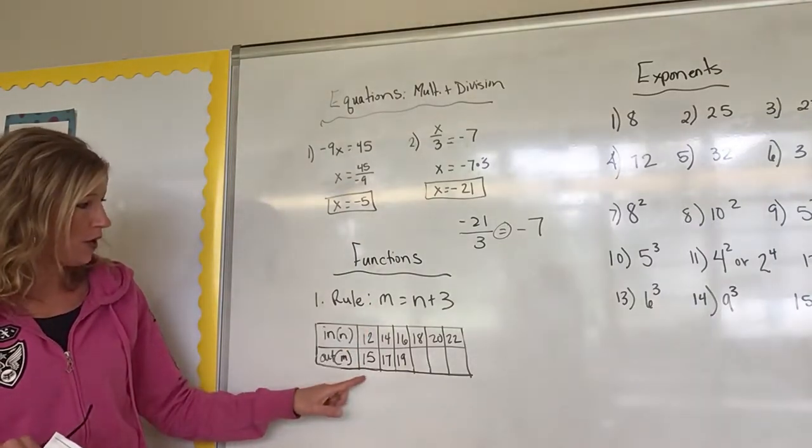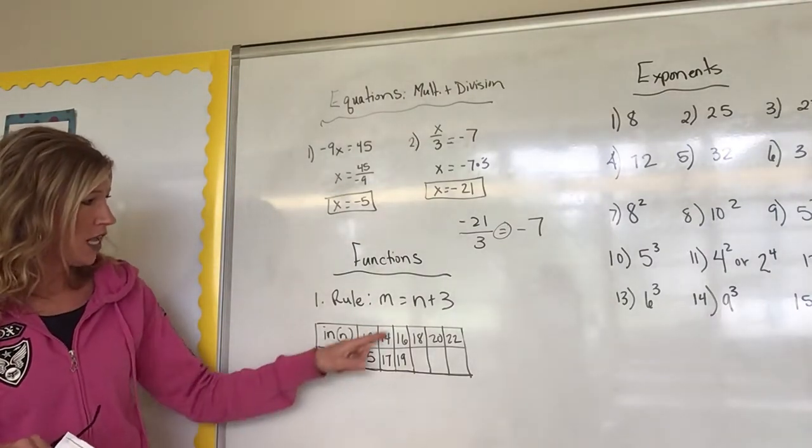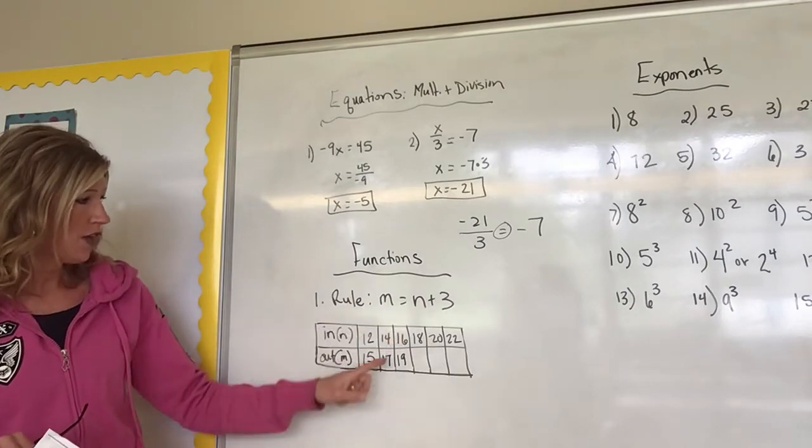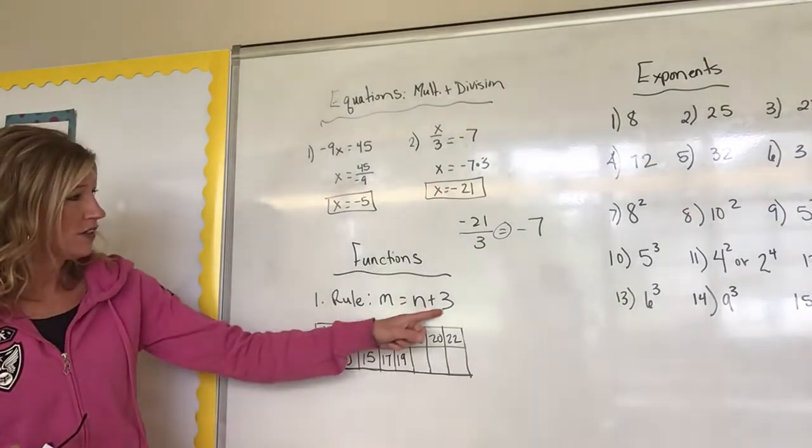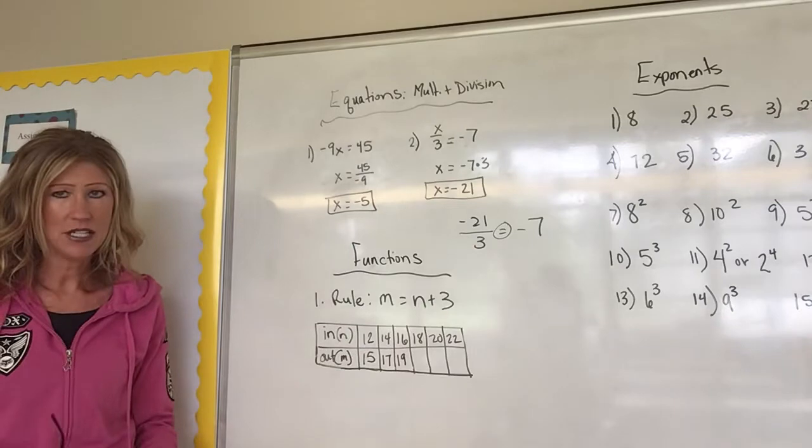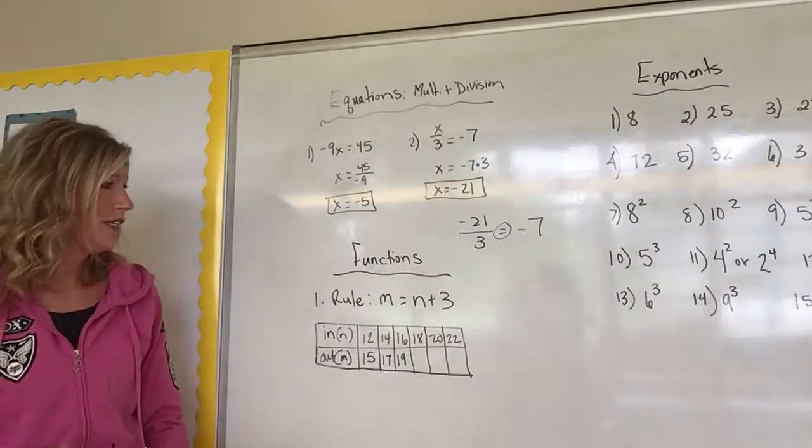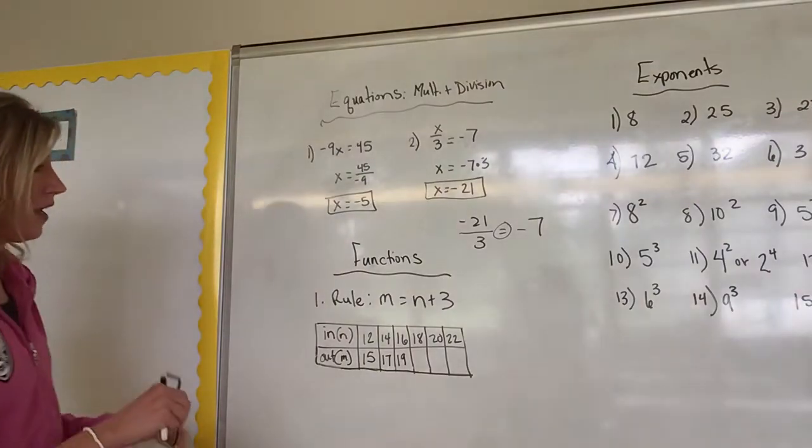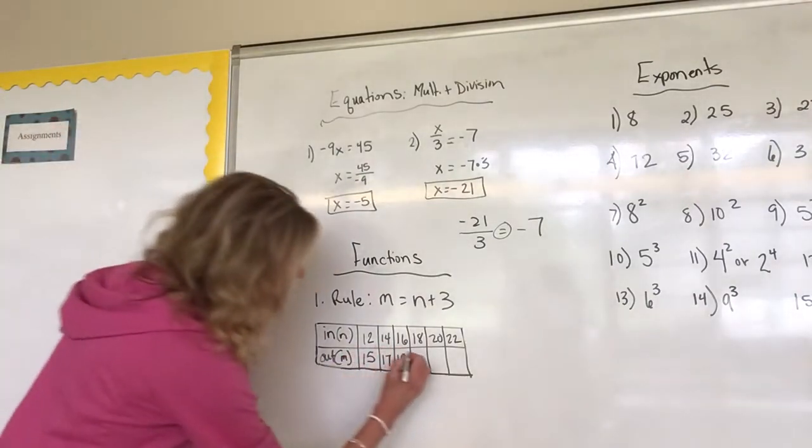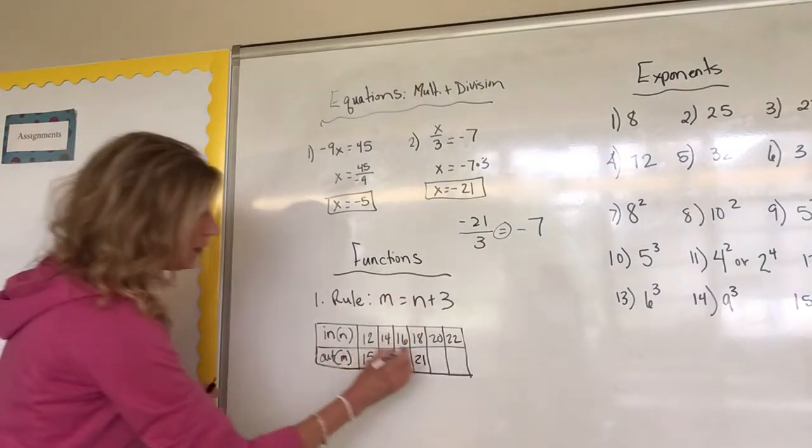So if I put 12 in here, 12 plus 3 would give me, and that's my input and my output, it would give me 15. If I put a 14 in there that would give me 17, if I put a 16 that would give me 19.